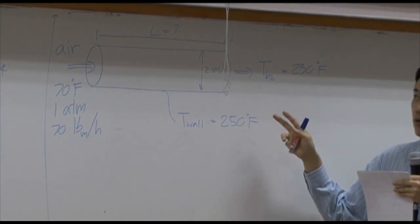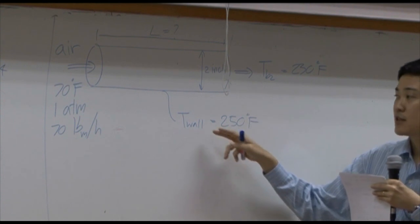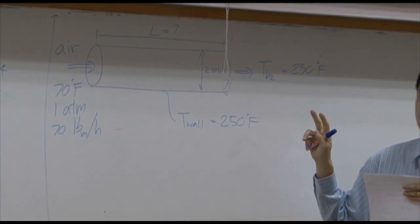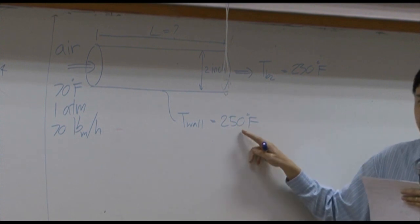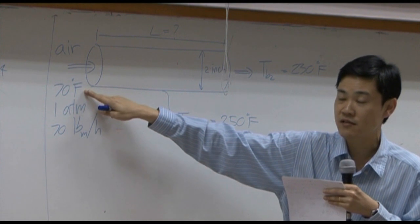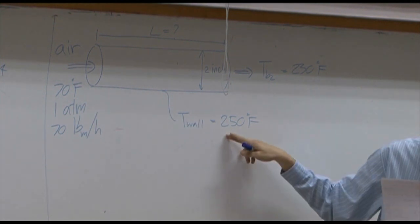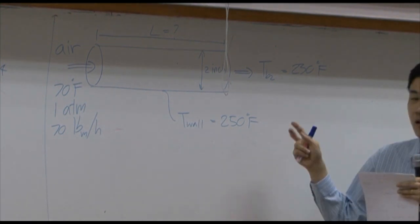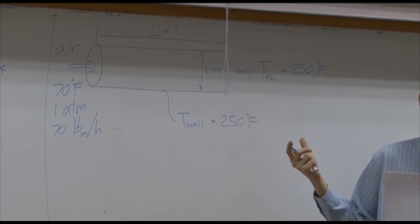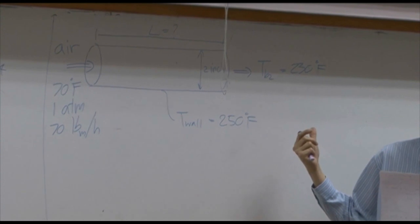The pipe wall here is heated. The temperature of the wall is kept to be 250 degrees Fahrenheit. You can see the inlet temperature is much lower than the temperature of the wall. So the longer the pipe, the higher the temperature of the air coming out.